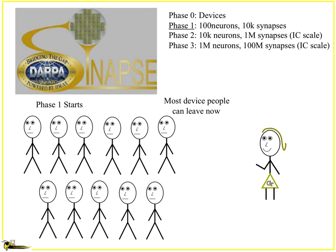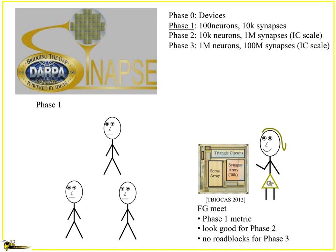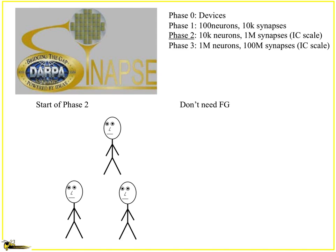But yeah, phase one starts and they end up saying, okay, you device people can leave now. What? It got a lot smaller. And we got there and the floating gates were like, hey, the phase one metric works and we're good in phase two, and I think we can get to phase three. There's some crossbars working on the other devices, really foundational work at University of Michigan. Started phase two was like, yep, we don't need those floating gates. Goodbye.